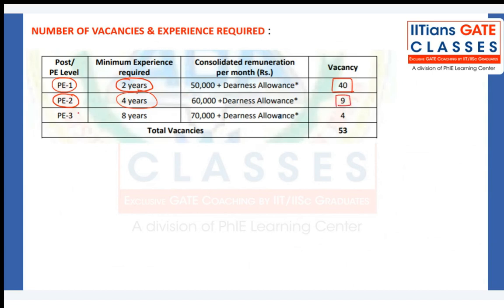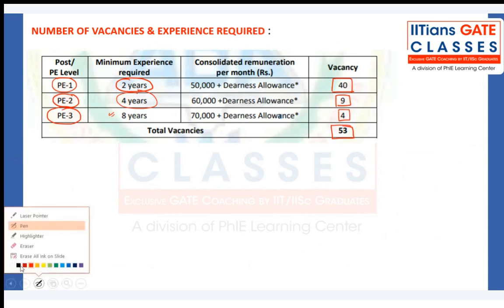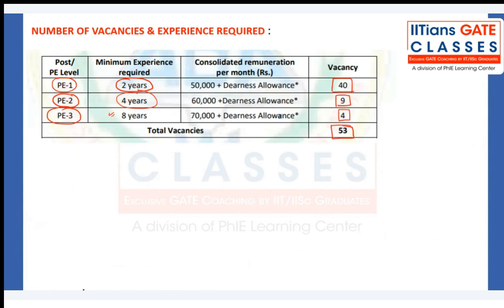For Project Engineer 2, the total number of vacancies is nine. For Project Engineer 3, you will be paid ₹70,000 but you need eight years of experience. In total there are 53 vacancies across all three levels, all for a tenure of five years.